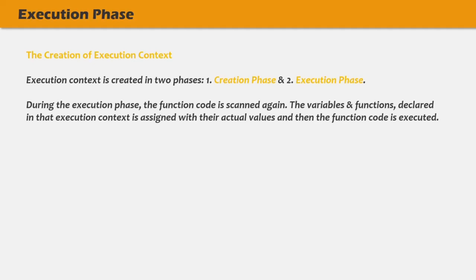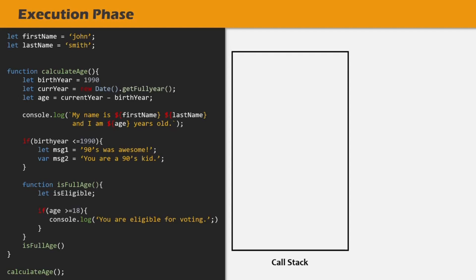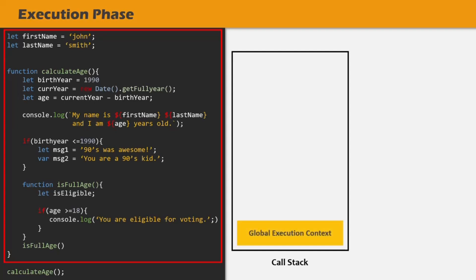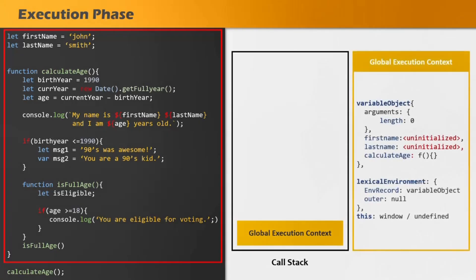Let's understand what happens behind the scenes with a simple example. We have already seen this code in our previous lectures. When this code is executed in the browser by the JavaScript engine, it is going to create a global execution context. Inside the variable object, the firstName and lastName variables will be stored and assigned with uninitialized, because these variables are created using the let keyword. Then there will be a property with the function name calculateAge, and since this function is created using function declaration syntax, it will be assigned with a pointer to the function definition.